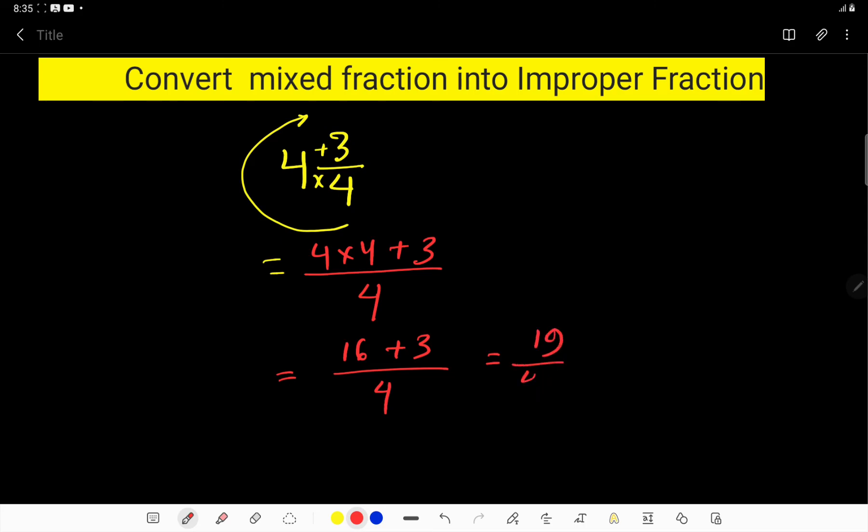19 over 4, and this is the answer. This is the improper fraction because here the numerator is greater than the denominator. In improper fractions, the numerator must be greater than the denominator. Thanks for viewing this video.